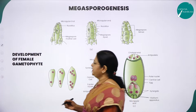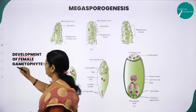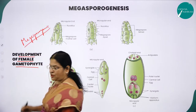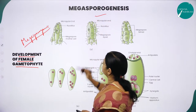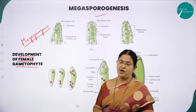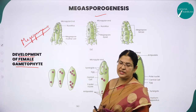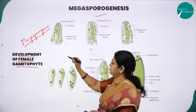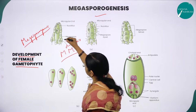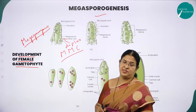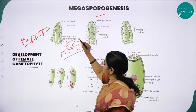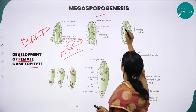Next, moving on to a very important process — the development of the female gametophyte, which is otherwise called megasporogenesis. A typical ovule contains a single megaspore developed from the megaspore mother cell through meiosis, which is a reductional division. The diploid MMC (megaspore mother cell) undergoes meiosis.